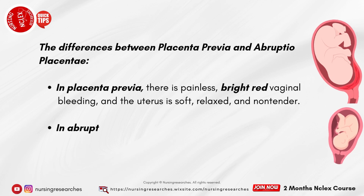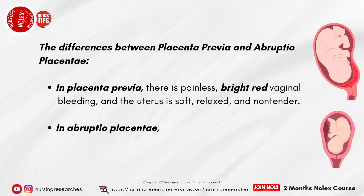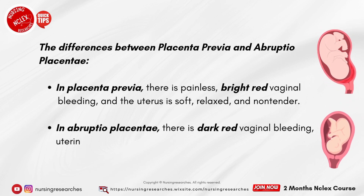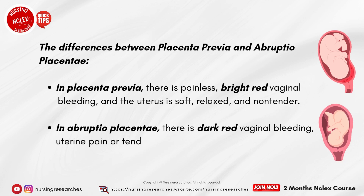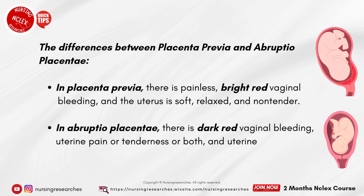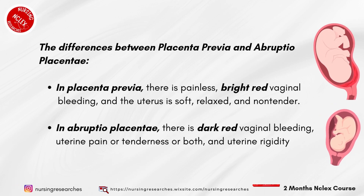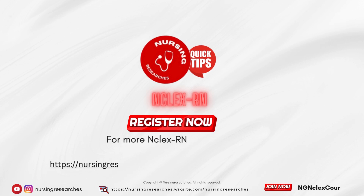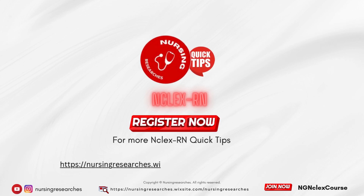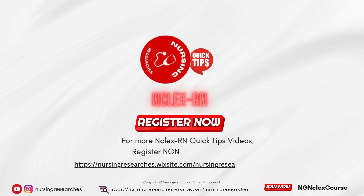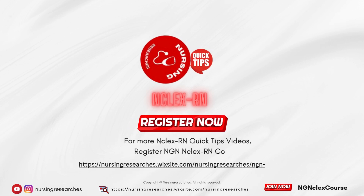In abruptio placentae, there is dark red vaginal bleeding, uterine pain or tenderness or both, and uterine rigidity. For more NCLEX RN quick tips videos, register for the NGN NCLEX RN course.